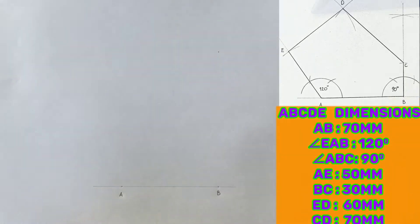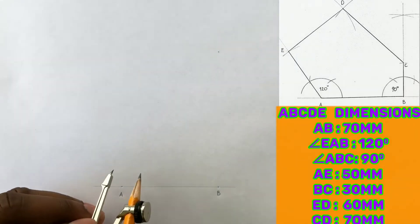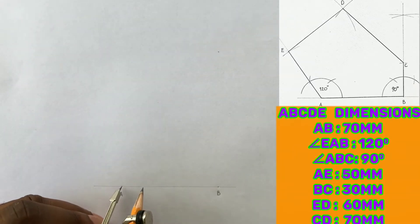Angle EAB measures 120 degrees. Construct a 120 degree angle at point A.